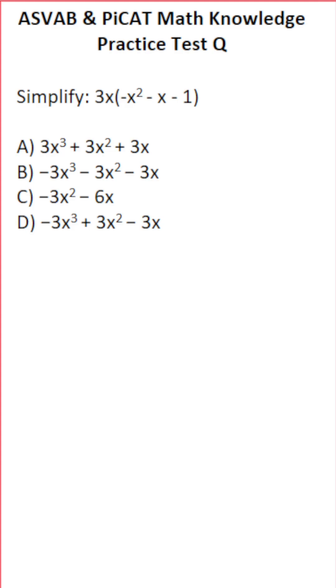This math knowledge practice test question for the ASVAB and PiCAT says simplify 3x times negative x squared minus x minus 1. I'm going to start by copying this down as if I was writing on my own scratch paper, which you will have for the ASVAB and PiCAT.